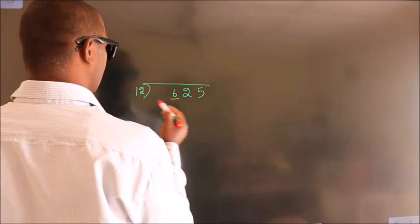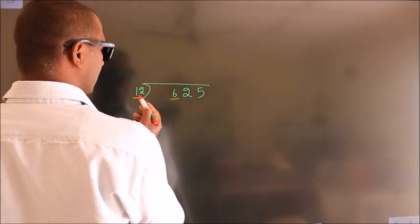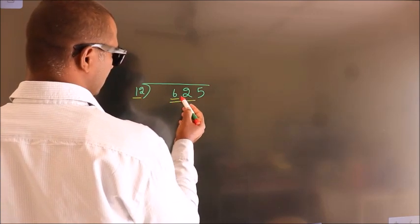Here we have 6, here 12. 6 is smaller than 12, so we should take two numbers: 62.